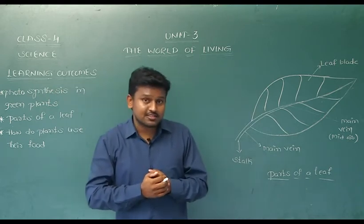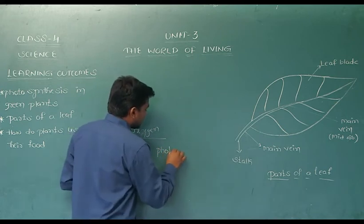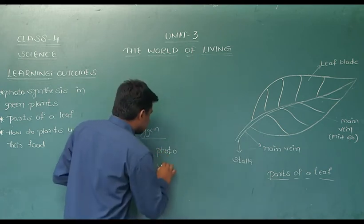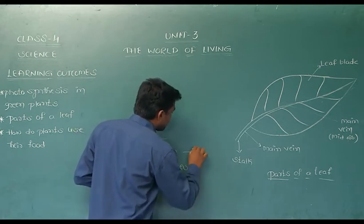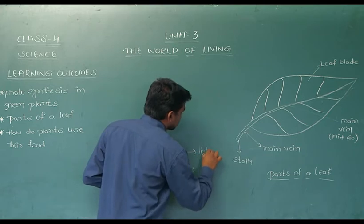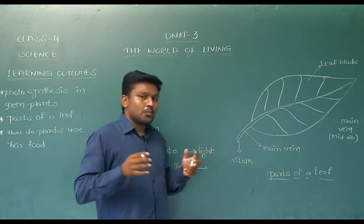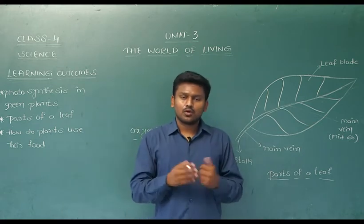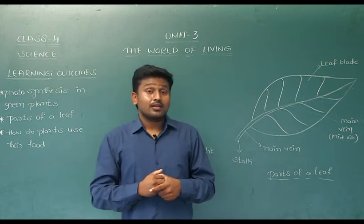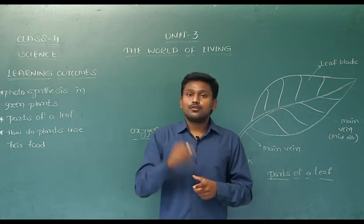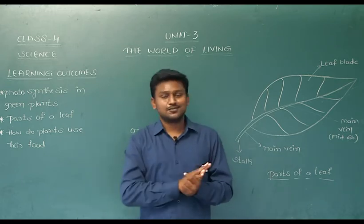So let us see that. The first one: photosynthesis in green plants. What is photosynthesis? Photo means light. Synthesis means putting together all the materials. Generally, the process of producing food by the leaves of the plant is called the photosynthesis process.